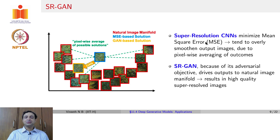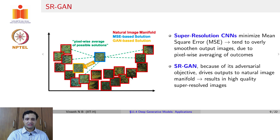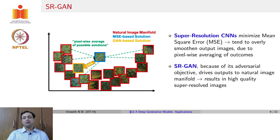GANs, by using adversarial loss, drive outputs closer to the natural image manifold. So if this is the natural image manifold, GANs try to push the generated image onto that manifold, which helps in getting high quality super-resolved images.